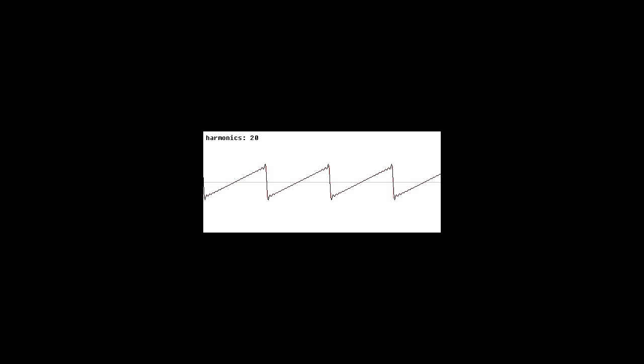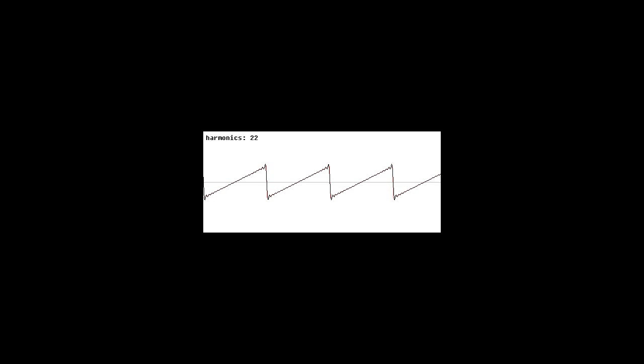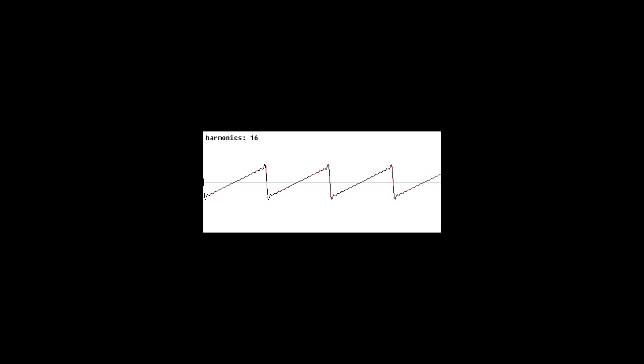A saw wave, for instance, contains every single integer harmonic — so the fundamental frequency times 2, times 3, times 4, times 5, and so on. This animation shows a saw wave being built up from partials starting with just the fundamental. You can see the waveform slowly turning into a saw wave as more partials are added.